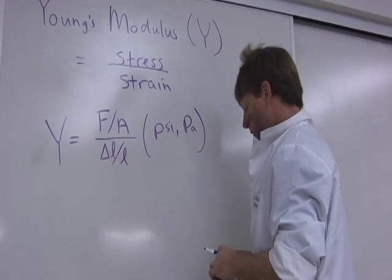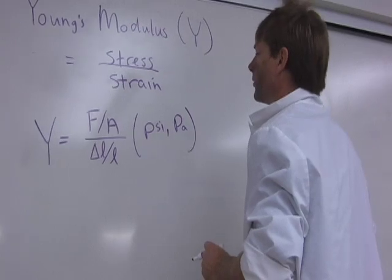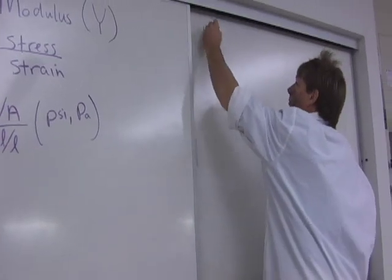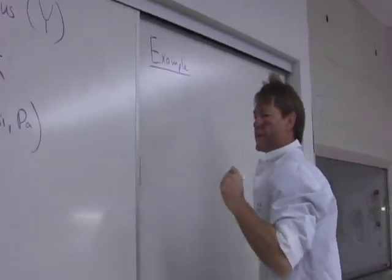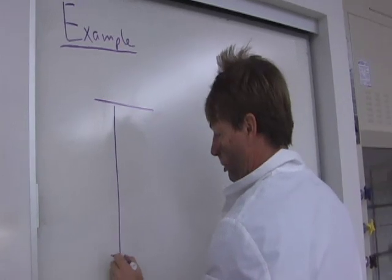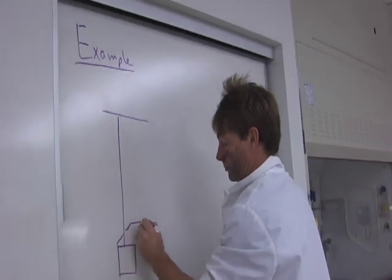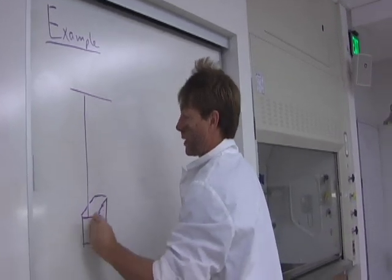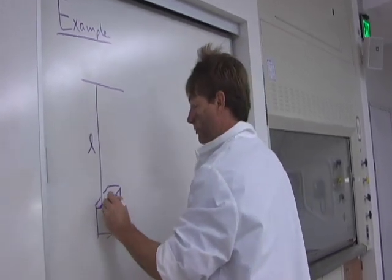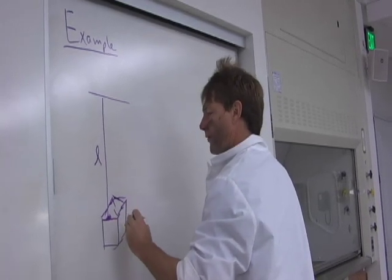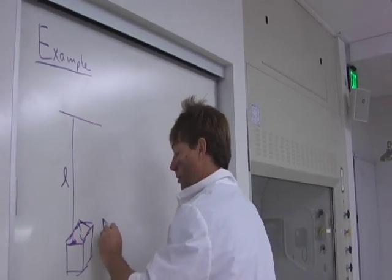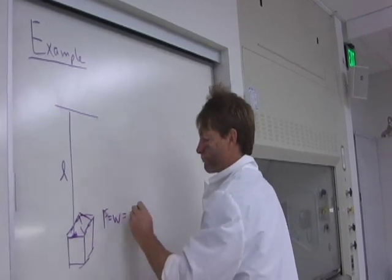So let's do an example. Let's say we hang a block. It hangs from a line with a certain length. And the block's got a mass of - let's do the weight. We'll do English units.